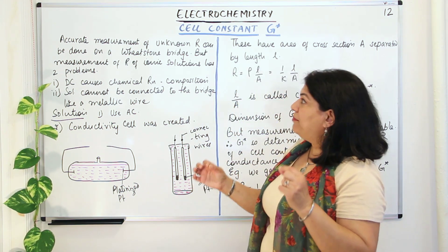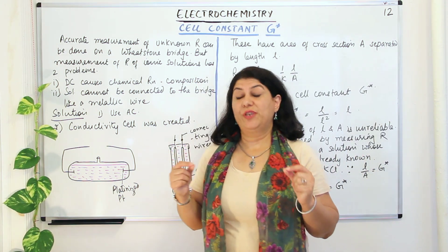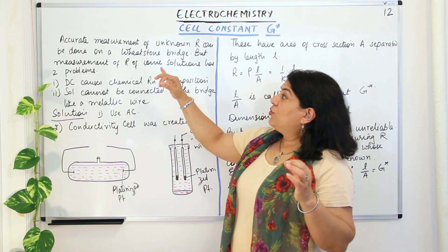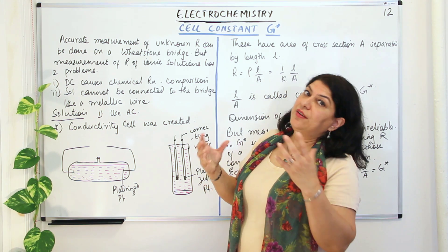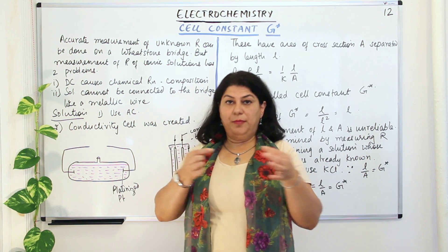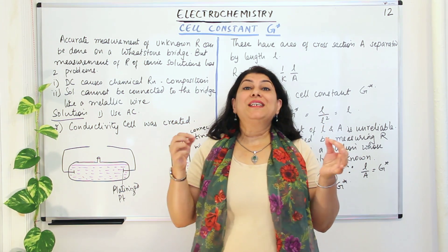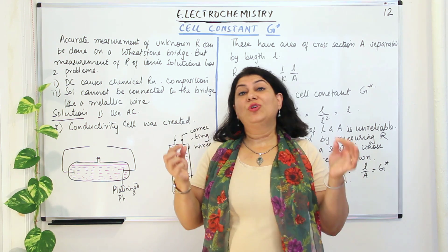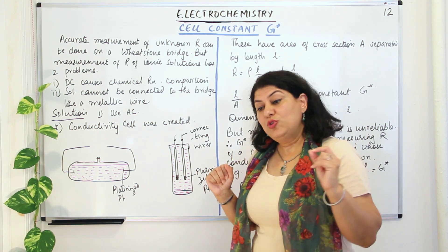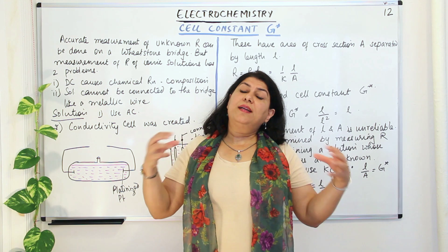When we carry out the measurement of an unknown resistance, we do it on a Wheatstone bridge — you must be aware of this from your physics practicals. An accurate measurement of an unknown resistance is done on a Wheatstone bridge where you take a metallic wire and connect it at the two ends. But the problem with an ionic solution is that a solution is a liquid, so how do you measure the conductance of a liquid?